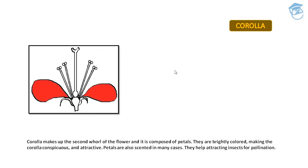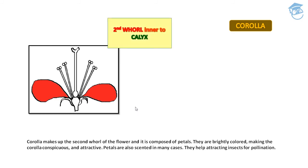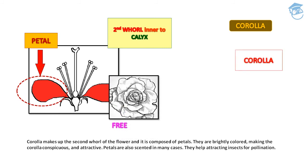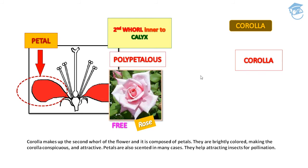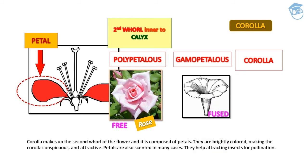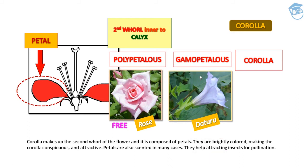Corolla is the collective form of petals, making up the second whorl of the flower. Petals are brightly colored, making the corolla conspicuous and attractive for insects. Petals may be in free form — polypetalous (seen in rose) — or in fused form — gamopetalous (seen in Datura).